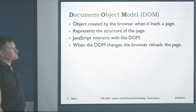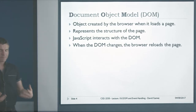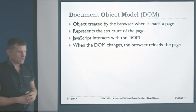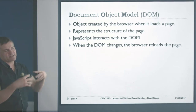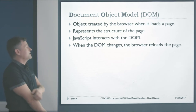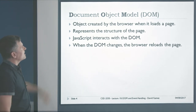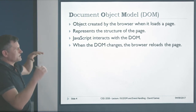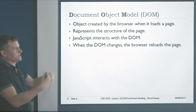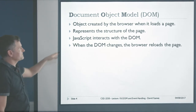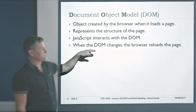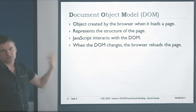We're going to start with the document object model. The document object model is an object created by the browser when it loads the page. It's similar to standard JavaScript objects — you can access different properties of it. It is a representation of the structure of the page as created by the HTML you've written. JavaScript interacts with the document object model, and when the document object model changes, the browser reloads the page, and that can also trigger JavaScript events.